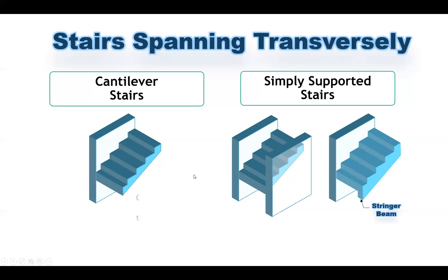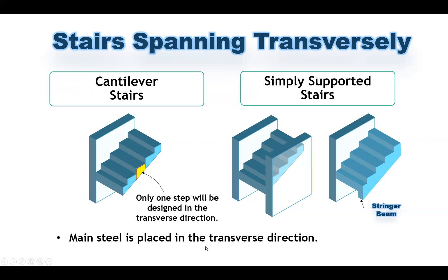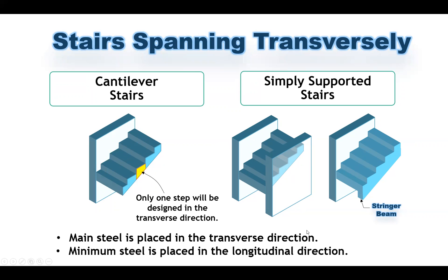For all of these types of stairs, only one step is designed in the transverse direction. When we design this type, we take only one step and design for that one step. We get the reinforcement in the transverse direction and then repeat it for all other steps. Main steel reinforcement will be placed in the transverse direction, in the same direction of the step, and minimum steel will be placed in the longitudinal direction.